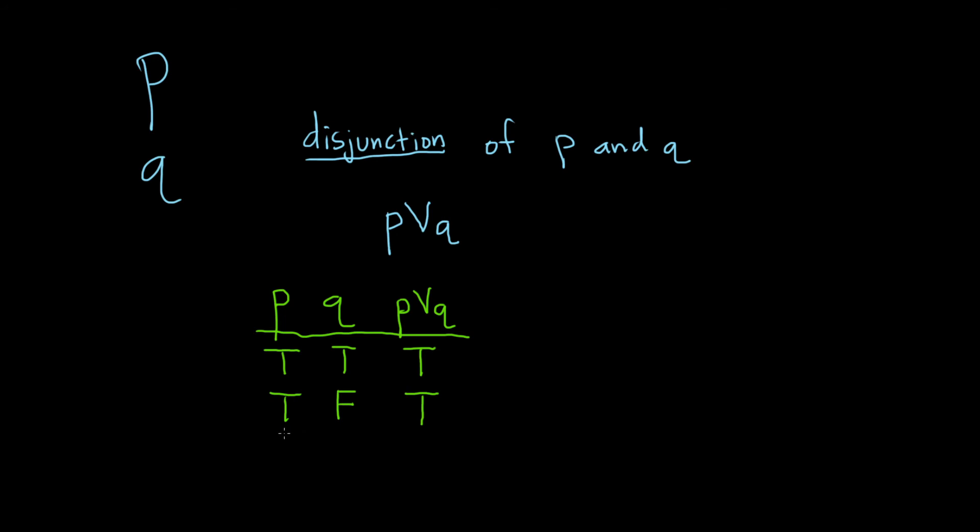And another case would be when p is false and q is true. So this would still be true because in this case q is true and that satisfies the condition that at least one is true.